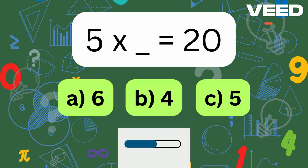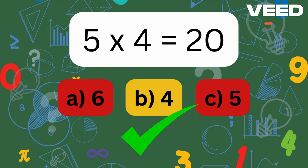5 times what is 20? That's right, 5 times 4 is 20.